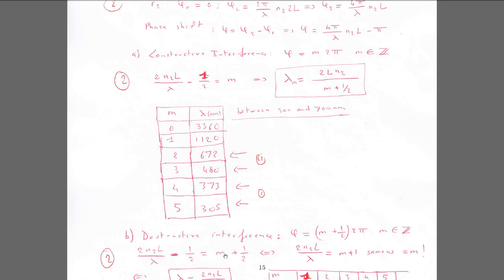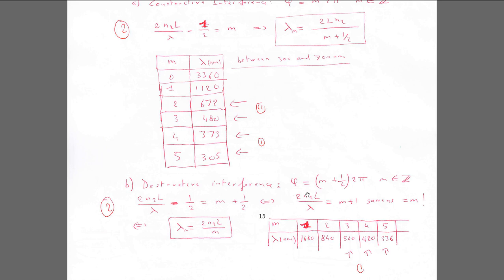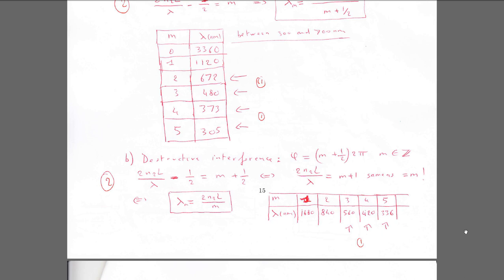For destructive interference, set the total phase shift equal to (m + 1/2) times 2pi. The optical path condition becomes 2n2L equals m times lambda, or equivalently a half-integer multiple. Note that m is an integer, so you can relabel m+1 as m if you like. Plug in values of m and check which wavelengths between 300 and 700 nm give destructive interference.